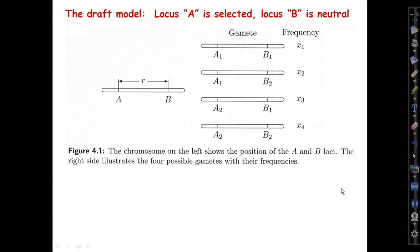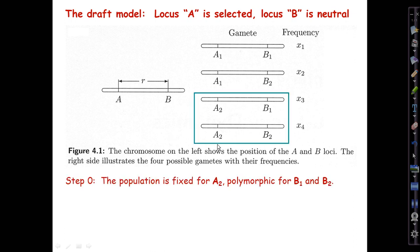So here's Gillespie's draft model. In the simplest possible version, we have two loci: a selected locus, which he calls A in figure 4 of your textbook. At the A locus we can have alleles A1 and A2, and the action there affects diversity at the B locus, which is neutral, with alleles B1 and B2. We'll have four gametypes X1 through X4, and we specify some recombination probability r between these two loci on a nuclear chromosome.